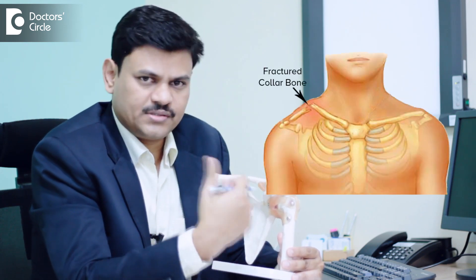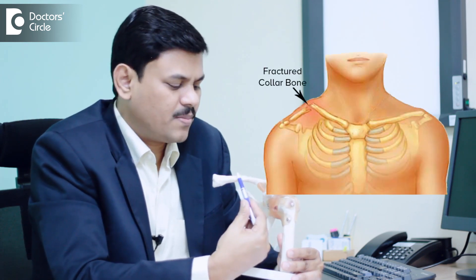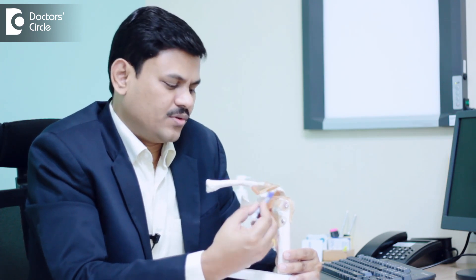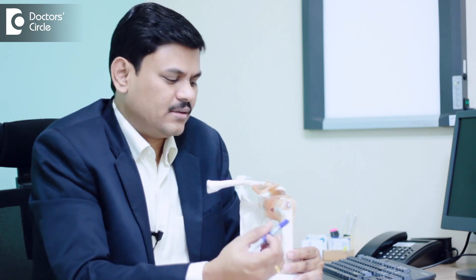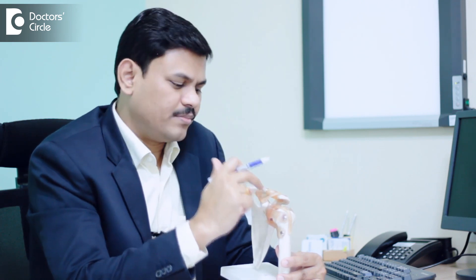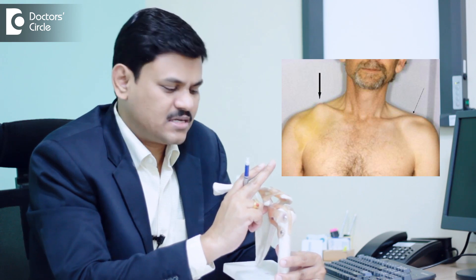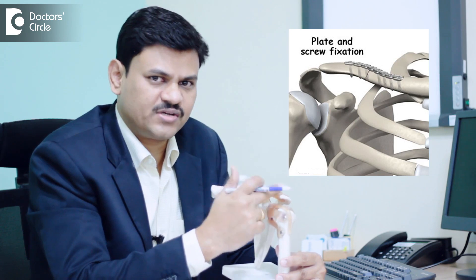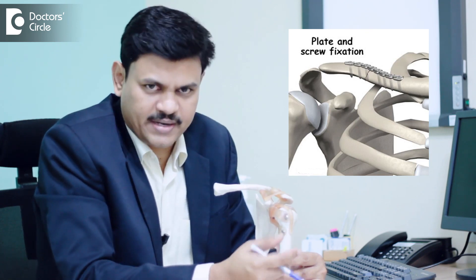The other common injury around the shoulder joint is collarbone injuries. The collarbone can be broken in the middle part or on the lateral end of the clavicle. The lateral end of the clavicle gives attachment to the trapezius muscle which pulls the bone up. Many times this fracture end tends to pop out beneath the skin. Such patients need a surgery where the bone is brought back into place and fixed with either wire, screws, or plates.